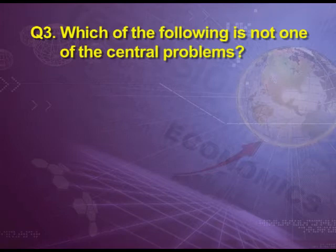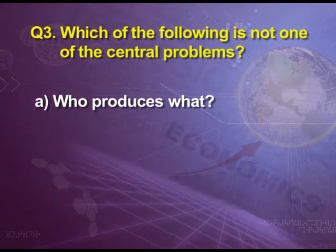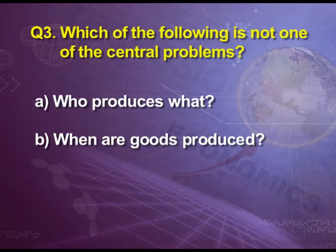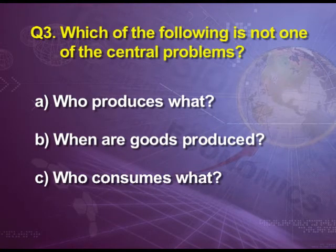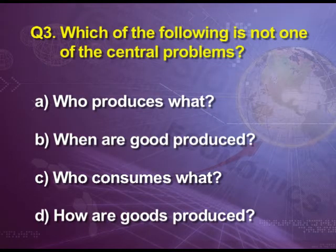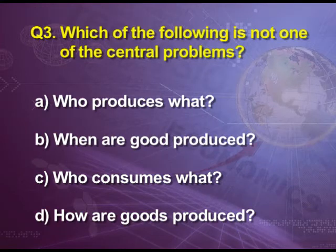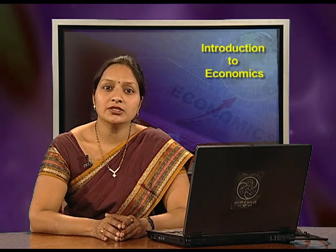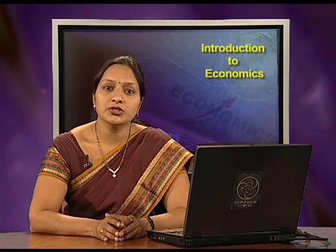Question 4: Which of the following is NOT one of the central problems? Remember — which is not a central problem. Option A: who produces what; Option B: when are goods produced; Option C: who consumes what; Option D: how are goods produced. The answer is B — when are goods produced. Time is not our problem. Our central problems are: what to produce, how to produce, and for whom to produce. So option B is not a central problem. Students, this was all about chapter 1 of class 12, Introduction to Economics. Thank you.